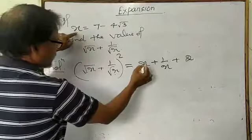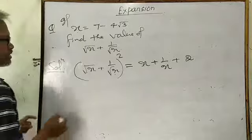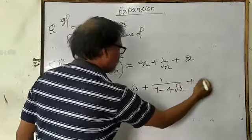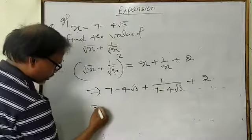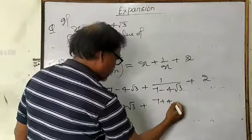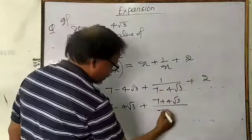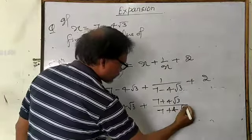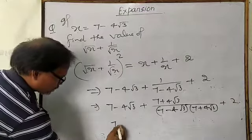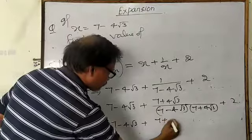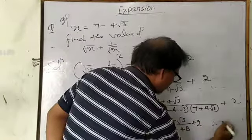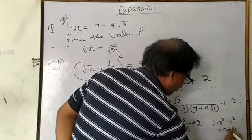Now, in place of this, first put the value of x, then 1 upon x, then plus 2. But you have to rationalize also: 7 minus 4 root 3 plus 1 upon 7 minus 4 root 3 plus 2. You have to rationalize this part — before rationalization you cannot find the value. Multiply and divide by the same number which is in the denominator but with the opposite sign: 7 plus 4 root 3, then plus 2. This gives 7 minus 4 root 3 plus 7 plus 4 root 3 upon 49 minus 48, plus 2. Use the formula a squared minus b squared equals a plus b into a minus b.